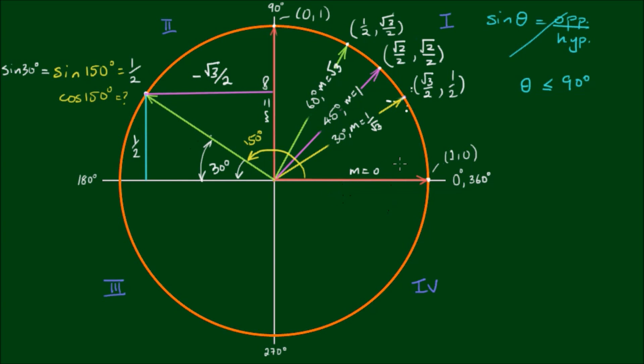So in the first and fourth quadrants, we're in the positive x region. And in the second and third quadrants, we're in the negative x. So cos of 150 is equal to negative of the cos of 30 degrees, which equals negative the square root of 3 on 2.